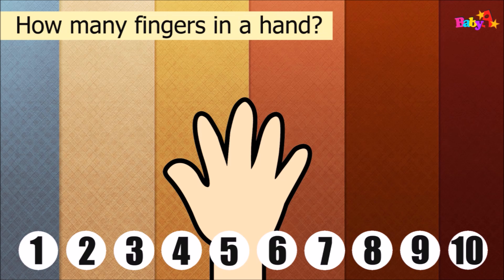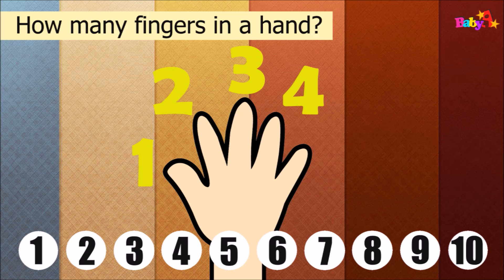How many fingers in a hand? 1, 2, 3, 4, 5. Five fingers in a hand.